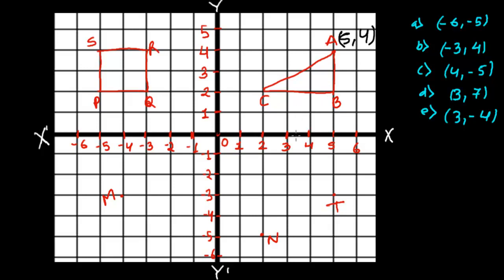For point B, the x-coordinate is again five, and the y-coordinate is one, two — so it is two. We write B as five, two. For point C, along the x-axis it is two, and along the y-axis upward it is two, so C is two, two. We write x-axis first, then y — that is our convention. So the three coordinates of the triangle are A(5,4), B(5,2), and C(2,2).